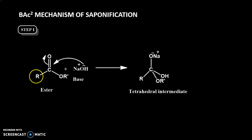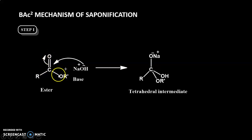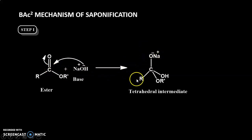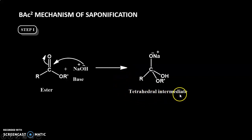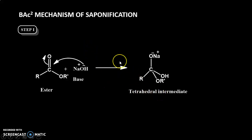In the first step, consider this ester RC(=O)OR'. The carbonyl carbon is electron-deficient because it is attached to two highly electronegative oxygen atoms. There is a nucleophilic attack of OH⁻ on this carbonyl carbon, forming an intermediate whose geometry is tetrahedral. This is popularly known as the tetrahedral intermediate, formed via acyl nucleophilic substitution.